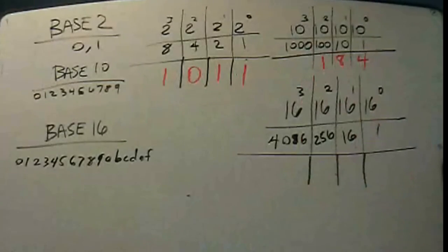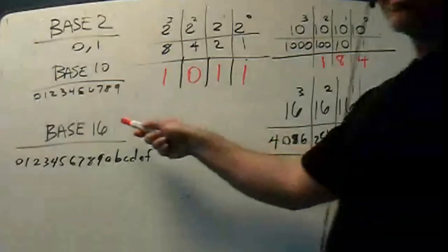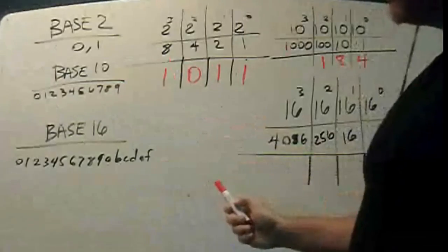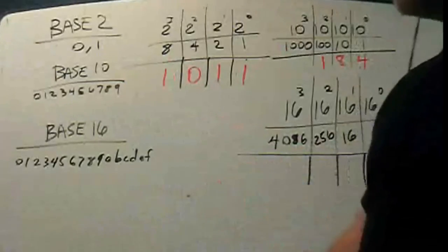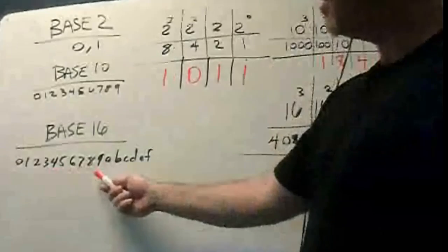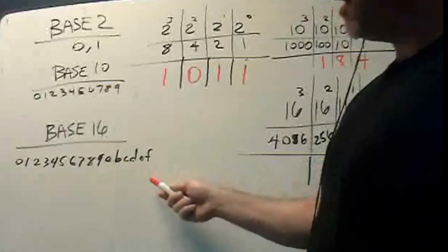Now, hexadecimal. Hexadecimal is base 16. So we have 16 characters. We have 0 to 9, and then we have A, B, C, D, E, and F.